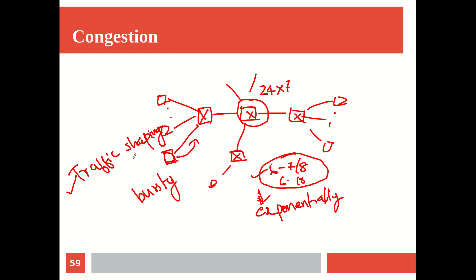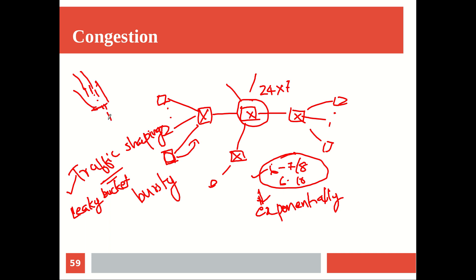Traffic shaping means you're trying to shape the traffic — on the background the operating system does this for you. Even though the user is forcing transmission, the OS can keep timing information. During peak internet usage time you can do this traffic shaping, or you can do it as a common static thing. In traffic shaping we have well-known algorithms — one popular one is the leaky bucket algorithm. The name itself explains it: you have a bucket where you open a pipe and water flows in, and there is a very small leak at the bottom of the bucket through which the water comes out.